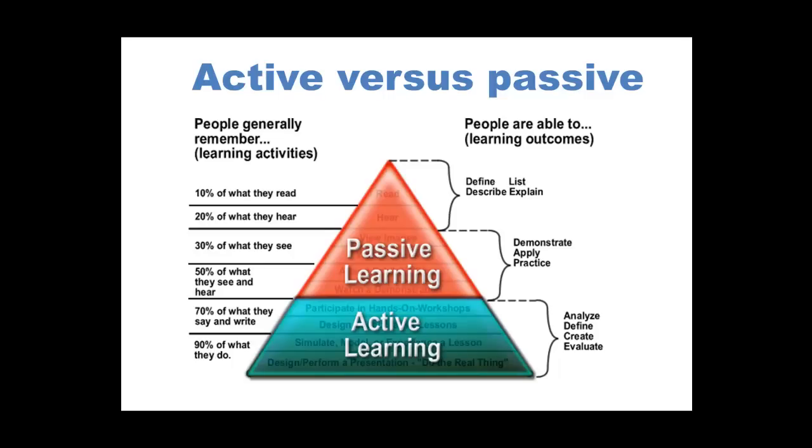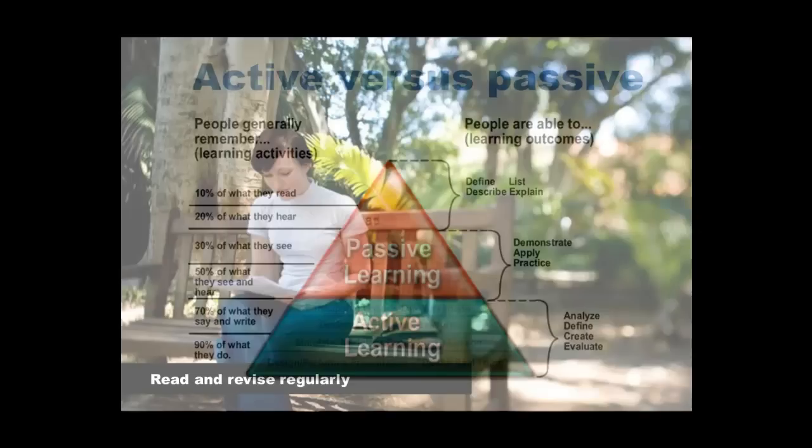We retain 10% of what we read and 20% of what we hear. So simply passively listening and writing notes during the lecture is not going to be enough to excel at university. To move towards the upper end of the scale requires active learning where after the lecture you reread and revise what you've seen and heard and start transforming it into your own words and understanding.